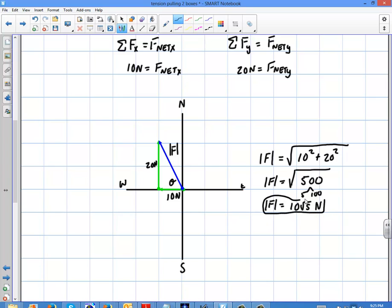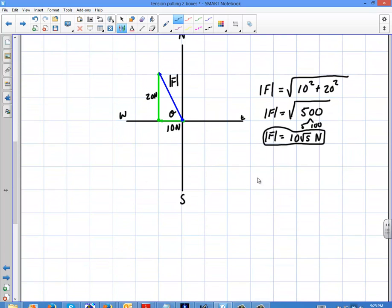Okay, so that's the first part. But now we need to find the angle. So my angle here is going to be theta equals the inverse tangent of the y component over the x component. And that's just going to give me the inverse tangent of 20 over 10, which is just 2 right here.